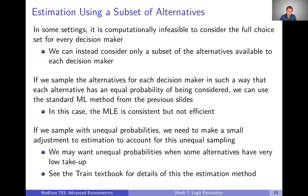There might be settings where you want to sample with unequal probabilities. For example, some alternatives may have very low uptake — like one person in your dataset chose that alternative. There's really very little information in such an alternative, since the choice probability will be so close to zero. So you might give those alternatives relatively low weight when sampling, and give other alternatives higher weight. You can still get consistent estimates, but you need to make a small adjustment to your estimation procedure. See the Train textbook for the details.